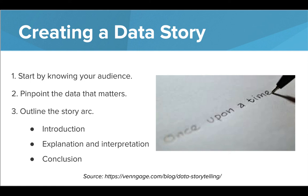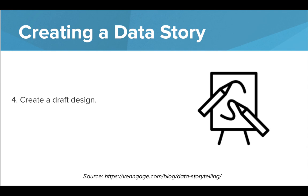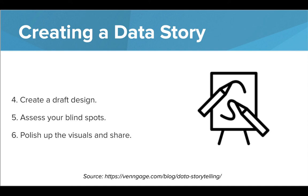The story arc should also include a conclusion with next steps or action items that should follow. The next step is when you get to tap into your artistic side. Draft a design that will be eye-catching and organized, and includes all of the story elements and visuals that will explain and tell the data story. Don't forget to assess your blind spots and have someone else review and leave feedback on your design, the data, and the overall story. After that, you can polish up all the individual visuals and information and share your story. The best part of creating a data story is that you can use your strengths — make it more visual if you have artistic talent, add more to the narrative if writing is your strength, or include a lot of data and interpretations if you enjoy that aspect of the data storytelling process the most.